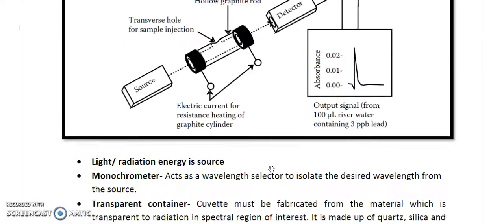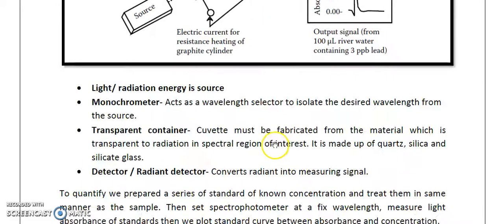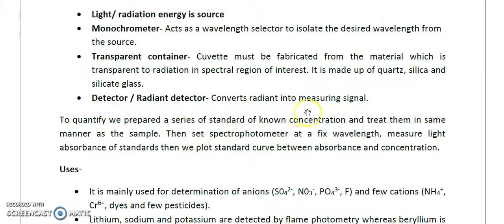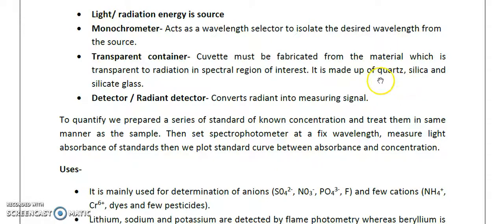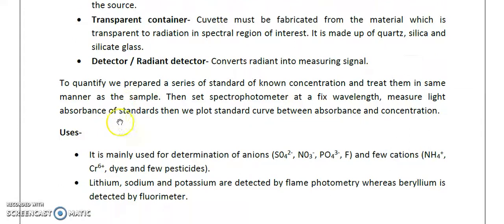The cuvette must be fabricated from a material that is transparent to radiation in the spectral region of interest. It is made up of quartz, so whenever we do spectrophotometry for UV radiation we generally use quartz cuvettes, because glass absorbs ultraviolet radiation. In the case of ultraviolet radiation we use quartz cuvettes or fused silica, and silicate glass for visible light.